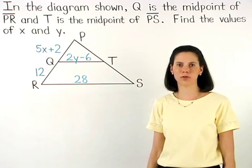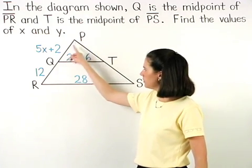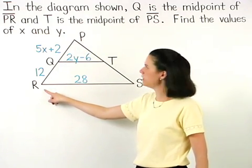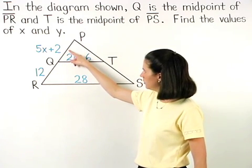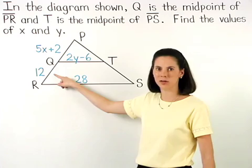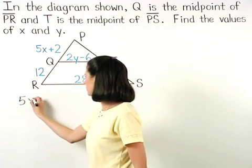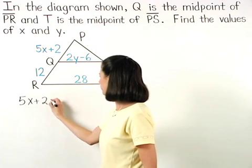To find the value of X, if Q is the midpoint of segment PR, then we know that the length of segment PQ equals the length of segment QR. Or 5X plus 2 equals 12.